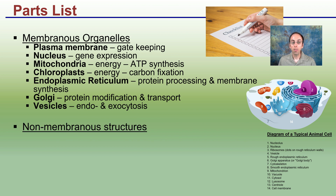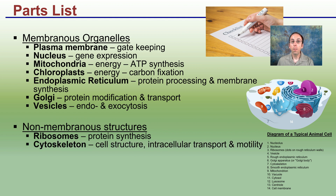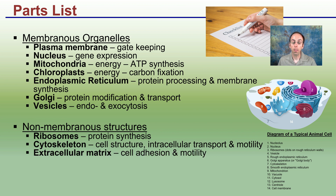We also have some non-membranous structures worth pointing out. Ribosomes are responsible for protein synthesis and don't have a specific membrane bound. The cytoskeleton provides cell structure, strength, mobility, and transport within a cell, and some of its components are involved in mitosis and cell division. The extracellular matrix is responsible for cells adhering to one another, cells moving, and cells interacting or communicating certain proteins with other cells in the area.